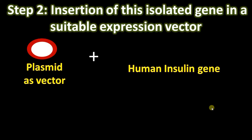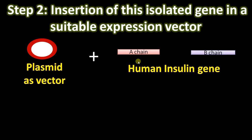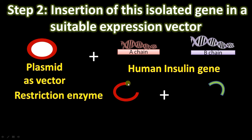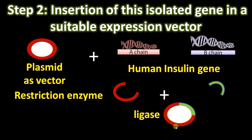Step two: insertion of the isolated gene into a suitable expression vector. Since our intention is to express the gene inside bacteria, we use a plasmid vector. We have the human insulin gene — the gene for the A chain and the gene for the B chain — and we use two separate cultures for each. Using a restriction enzyme, we make a cut inside the vector and insert the gene, creating a recombinant DNA molecule. The cut ends are then sealed with ligase enzyme, giving us a recombinant vector with A gene and another with B gene.